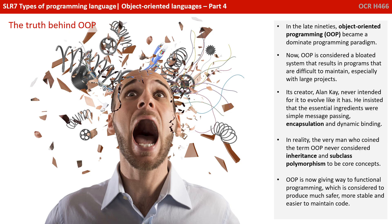Alan Kay insisted there were only three essential ingredients for OOP: simple message passing, encapsulation, and dynamic binding. In reality, the very man who coined the term OOP never even considered inheritance, subclassing, or polymorphism to be core concepts. OOP is now giving way slowly to functional programming, which is considered to produce much safer, more stable, and easier-to-maintain code. That said, don't worry about everything you've learnt — it's important theory, it's all accurate, and it's the stuff you'll be tested on in the exam.